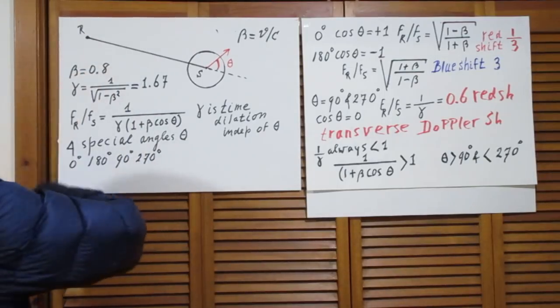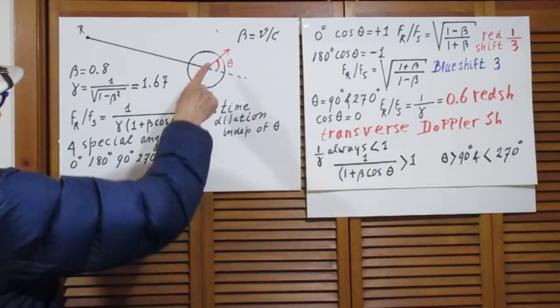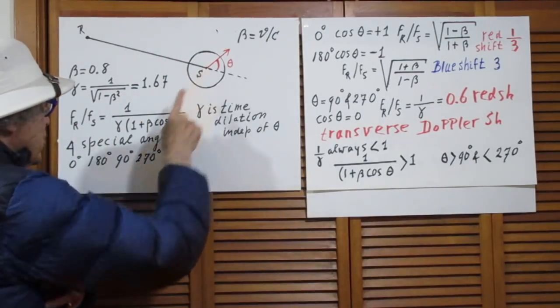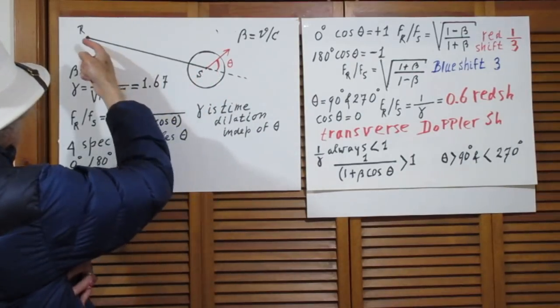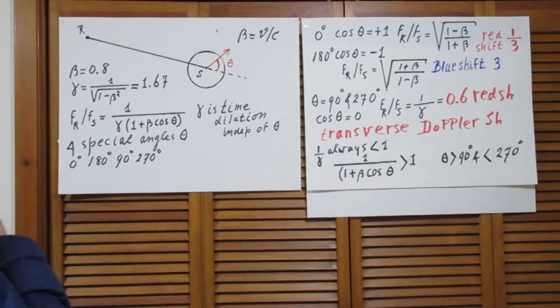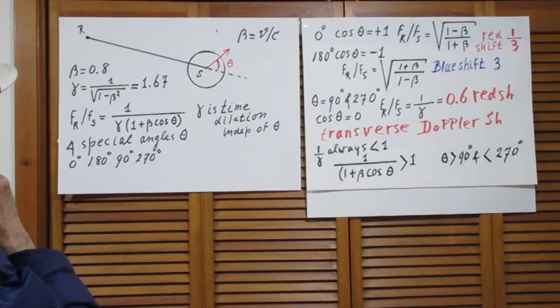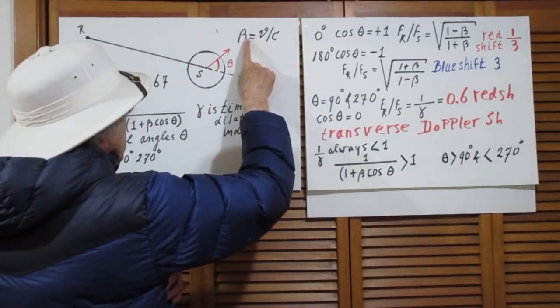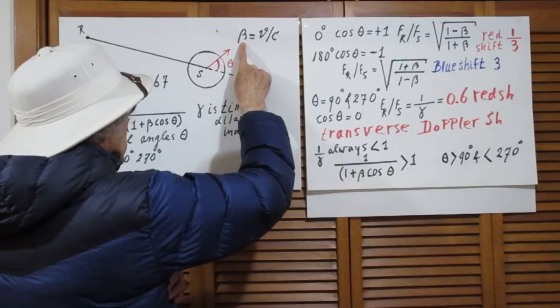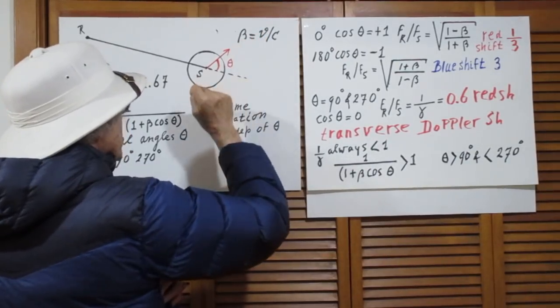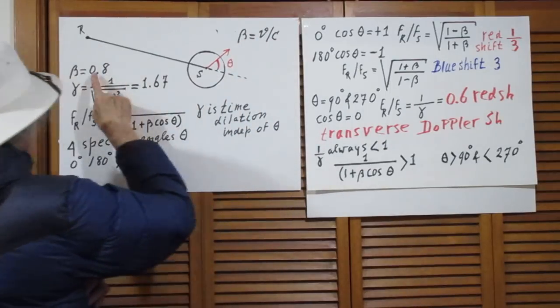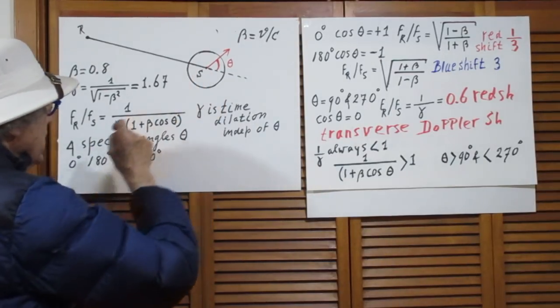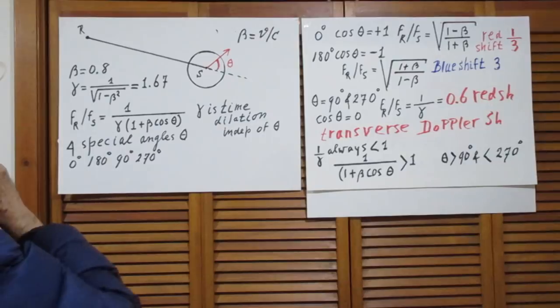You are here, you are the receiver, and very far away from you is the galaxy that I call the source, because the galaxy sends in your direction a laser beam, electromagnetic radiation. It moves with a speed v relative to you. Beta is v over c, we normally use this, and I chose beta to be 0.8. That means the speed at which this object moves relative to you is eighty percent of the speed of light.